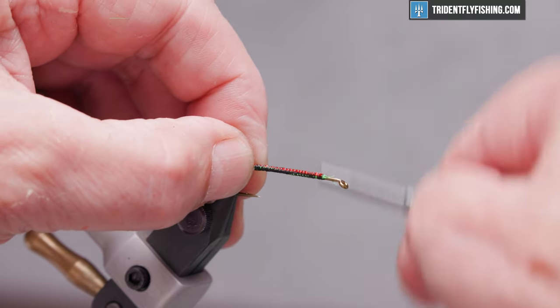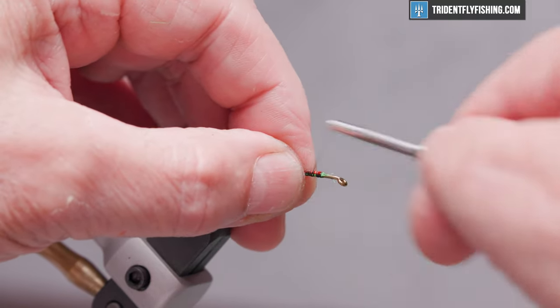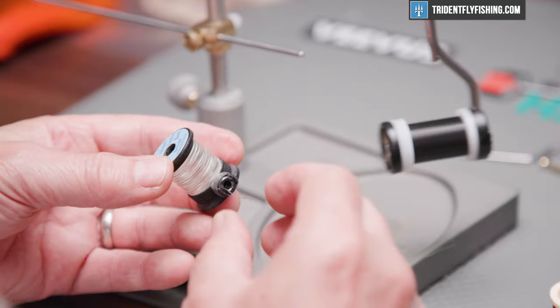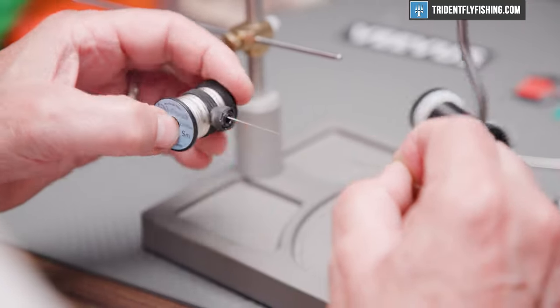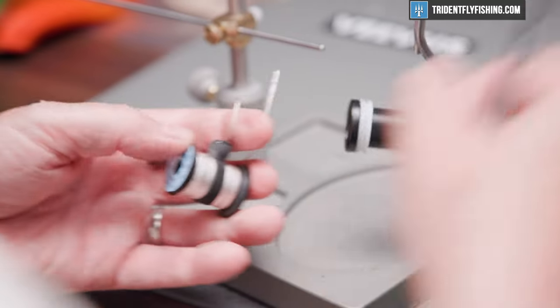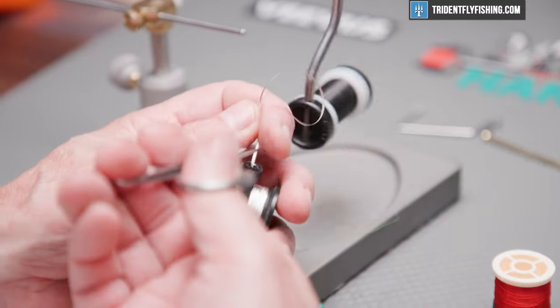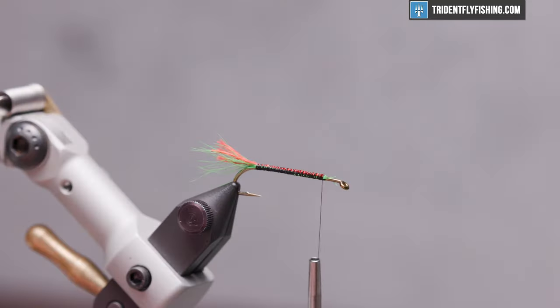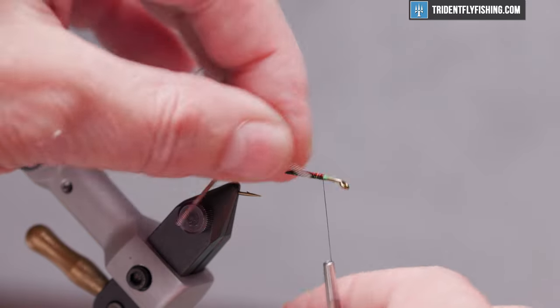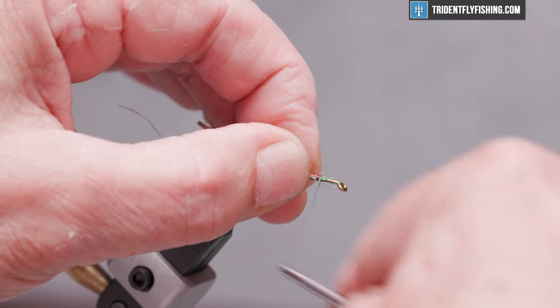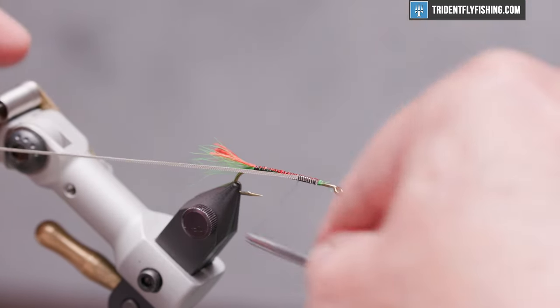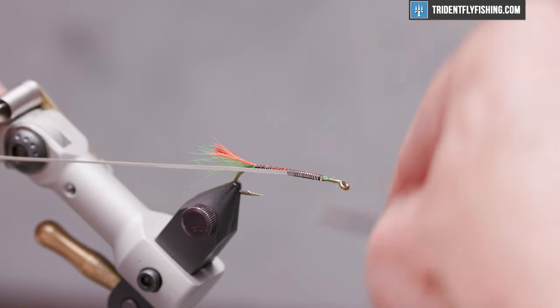The next material we're going to tie in is the rib. So we'll run our thread back up, and here we're going to tie in our rib. This is a uni French tinsel in the size small. This is really tough stuff, so use your crappy scissors for this. I like this French tinsel because it's got a little bit of a shimmer to it. Going to tie that on the near side of the hook, run our thread all the way back to the base of the tail again.